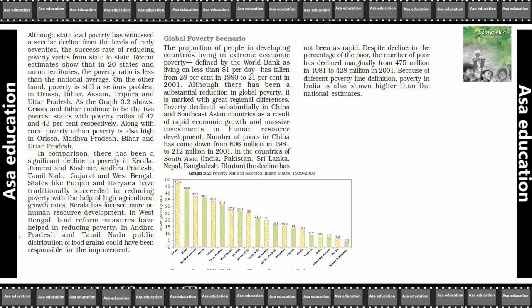Despite this, the number of poor in South Asia has declined only marginally, from 475 million in 1981 to 428 million in 2001.